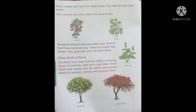The plants with soft stems are called herbs. Some of them have medicinal value. These are smaller than shrubs. Mint, grass, and wheat are some herbs. Jo plants ka stem soft yaani naram hota hai un ko hum herbs kehte hain. Herbs shrubs se chhote hote hain aur herbs ko hum as medicine bhi use karte hain — un ki medicinal value hoti hai.